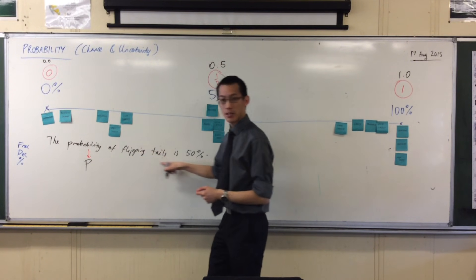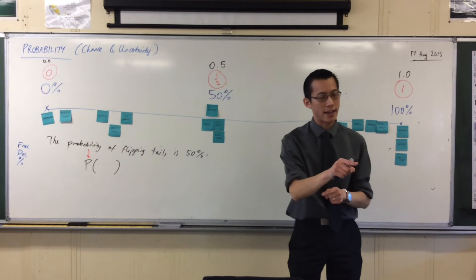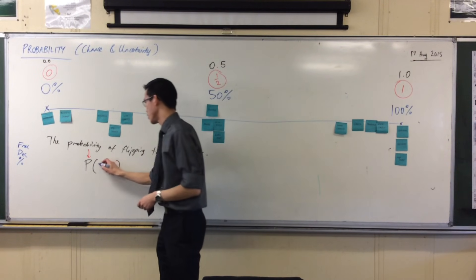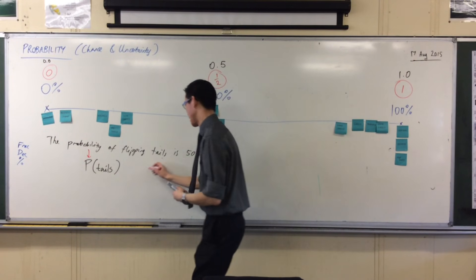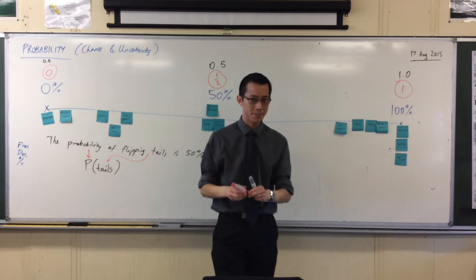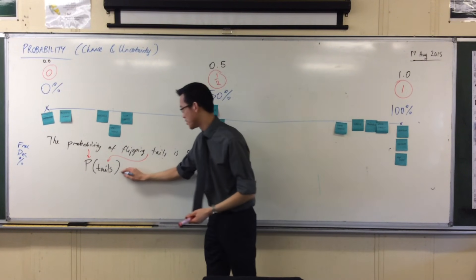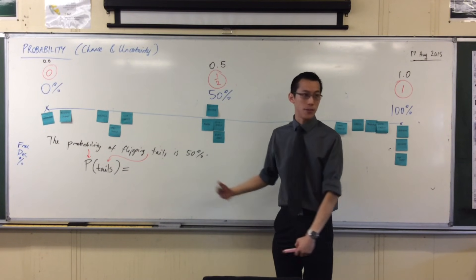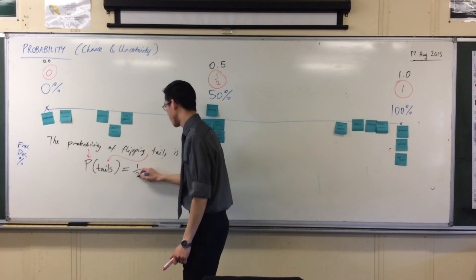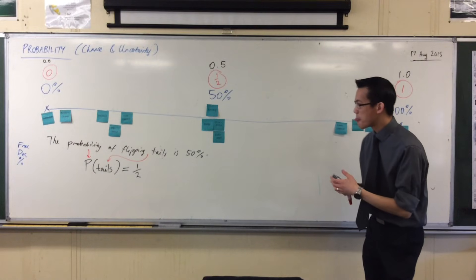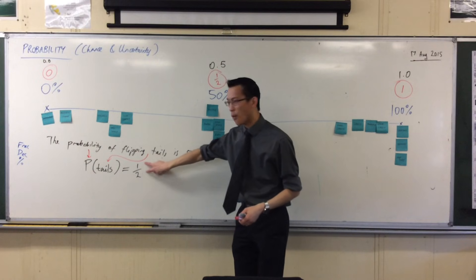What I put in the brackets is the event I'm interested in — tails. And I use equals as my symbol for 'is.' I could write 50%, or one half, or 0.5 — they all mean the same thing. Now we know intuitively it's a half, but where does the 1 and the 2 come from?